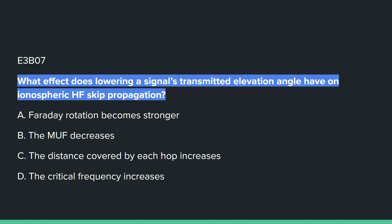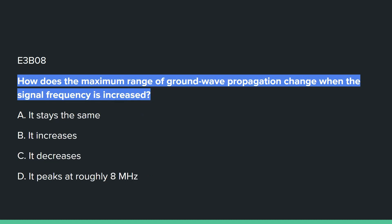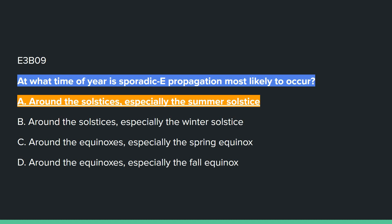E3B07: What effect does lowering a signal's transmitted elevation angle have on ionospheric HF skip propagation? C: the distance covered by each hop increases. E3B08: How does the maximum range of ground wave propagation change when the signal frequency is increased? C: it increases. E3B09: At what time of year is sporadic E propagation most likely to occur? A: around the solstices, especially the summer solstice.